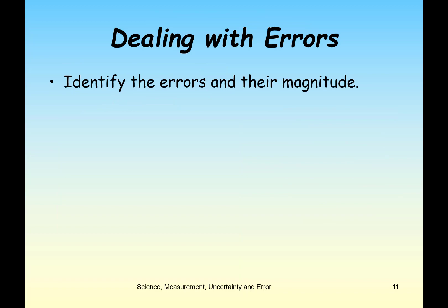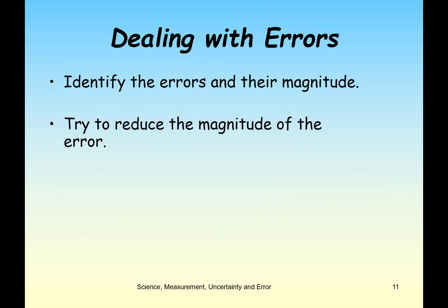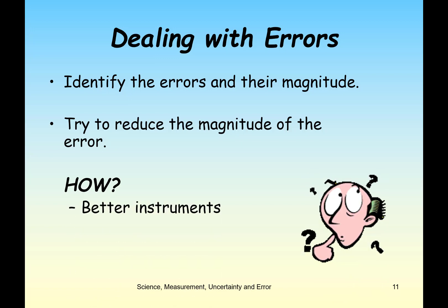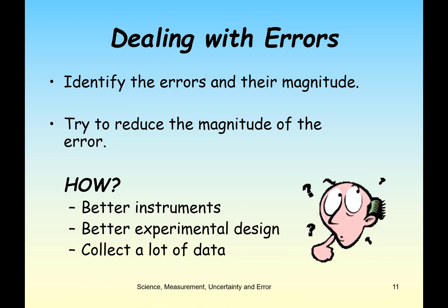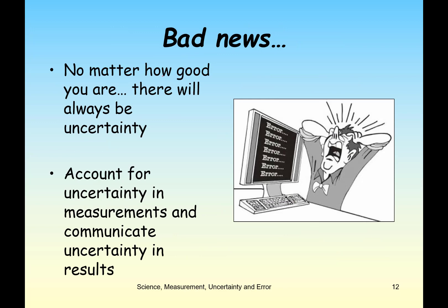When we do an experiment, we want to identify possible errors and their magnitudes, and try to reduce them as much as possible using precise instruments and correct experimental design. Collecting a lot of data also helps reduce random error. No matter how good we are, there will always be some uncertainty, so we need to account for it using significant digits and other techniques, and communicate that uncertainty in our measurements and results. In a later lecture, we'll talk more about how to account for uncertainty in results.